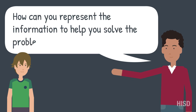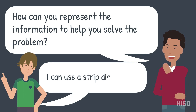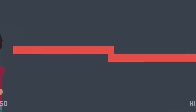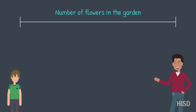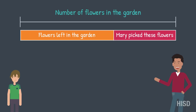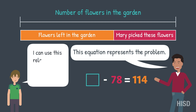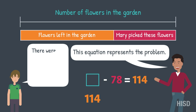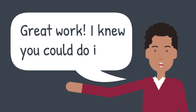How can you represent the information to help you solve the problem? I can use a strip diagram. This equation represents the problem. I can use this related fact to solve the problem. There are 192 flowers in the garden before Mary picked some. Great work! I knew you could do it!